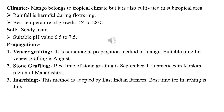The best temperature for mango growth is 24 to 28 degrees Celsius. Sandy loam soil is good for mango cultivation with a suitable pH of 6.5 to 7.5 — almost neutral soil is ideal. For propagation, veneer grafting — also known as side grafting — is the commercial propagation method of mango across India. The suitable time for veneer grafting is August.